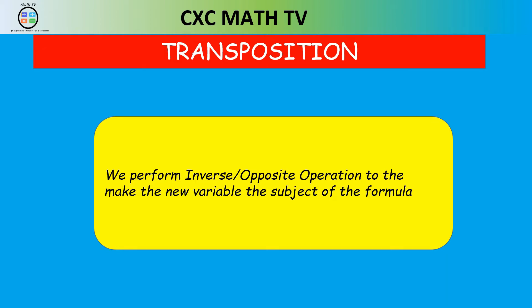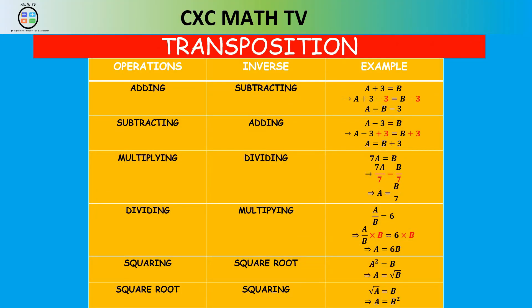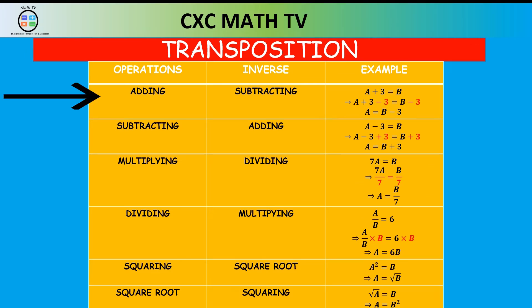Consider this table: if the operation is adding, the inverse operation would be subtracting. For example, if A plus 3 equals B, then in order to make A the subject, you'd have to subtract 3 from both sides. The operation is addition, but to remove the addition we subtract 3 from both sides, and that gives us A equals B minus 3.